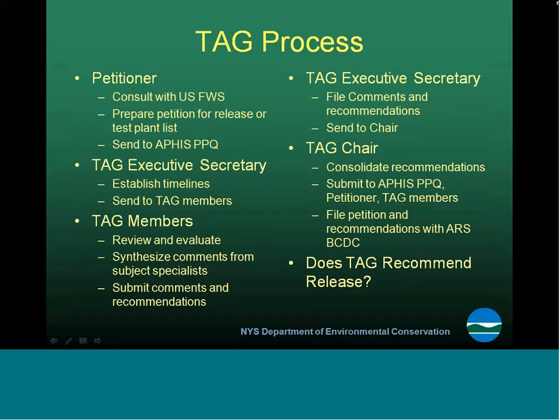The TAG process begins with a petitioner who wants to release the organism. TAG's basic job is to review the petition, look at the biology and test data, make recommendations for additional work to be done, and ultimately make a recommendation to USDA on whether or not a permit should be issued for that organism.